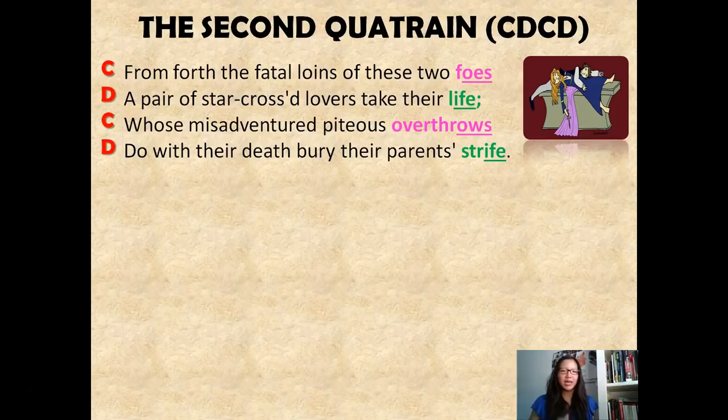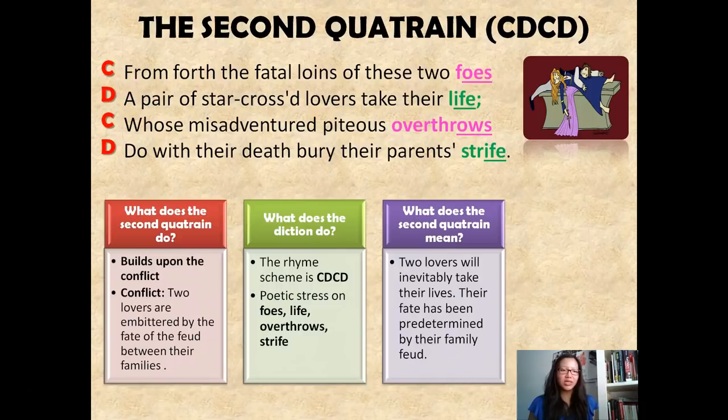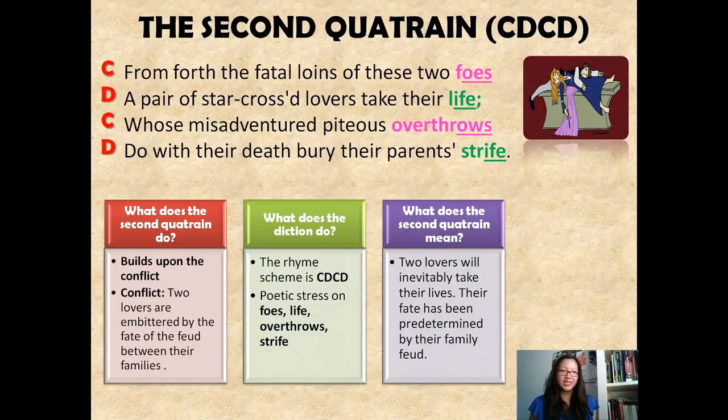The second quatrain builds upon the conflict. We now know why there's a conflict — two lovers, Romeo and Juliet, star-crossed lovers who were fated from the very beginning of their birth to eventually take their lives because of the feuding going on between their two families. The rhyme scheme is CDCD, with alternating rhyme between 'foes,' 'life,' 'overthrows,' and 'strife.' This means the two lovers will eventually take their lives because it's already been fated by the feud.